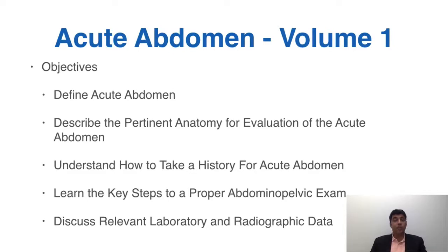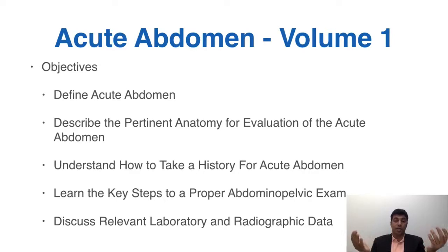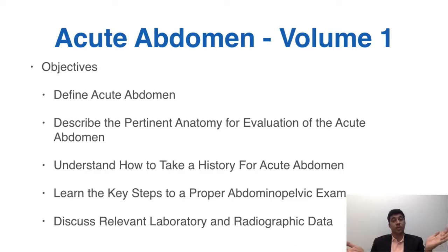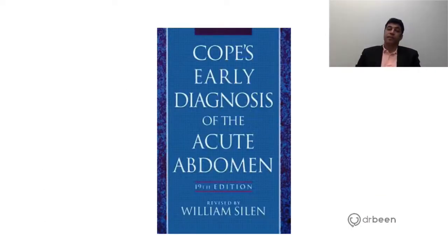Our objectives for this lecture are: first, to define what is the acute abdomen. We'll talk about the important pertinent anatomy for the evaluation of the abdomen, how to take a proper history, how to do a proper physical examination with some specific commonplace signs, and we'll talk about relevant laboratory and radiographic data.